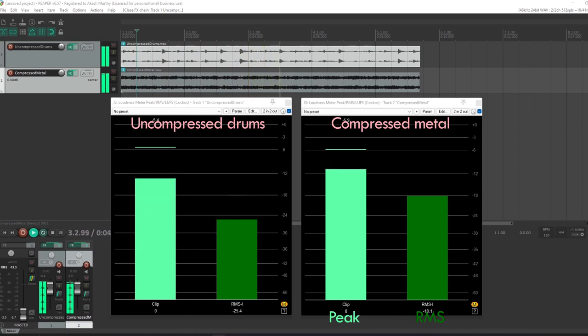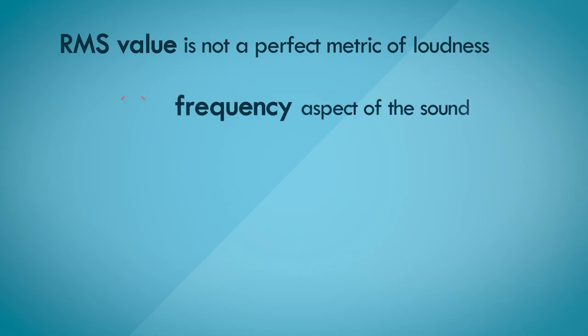If you observe the meters here, the light green indicates the peak levels, and the darker green represents RMS levels. As you can see, when they're both played side by side, their peak levels kind of match up, but their RMS levels are way off. The RMS level, though not a perfect metric of subjective loudness, is the simplest way to get an idea of how loud a signal is. It's easy to calculate and easy to implement. It doesn't take into account the frequency aspect of the sound source, but it does take into account the temporal aspect of the sound source.